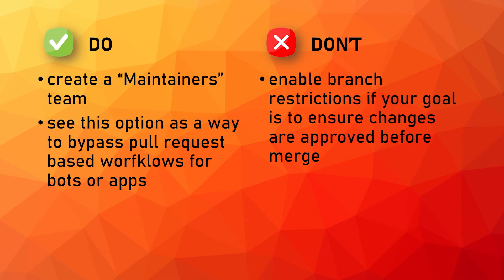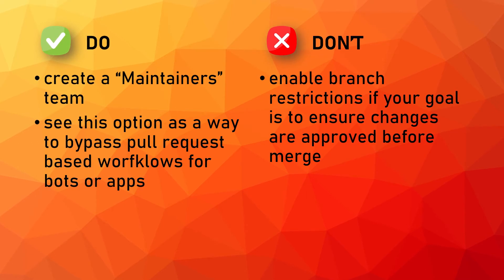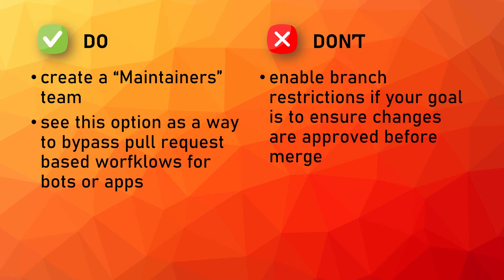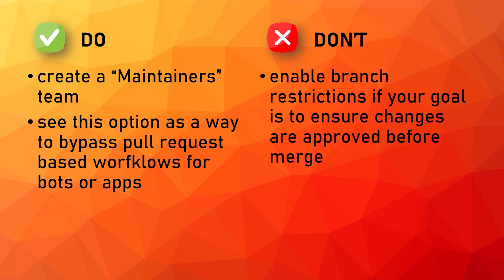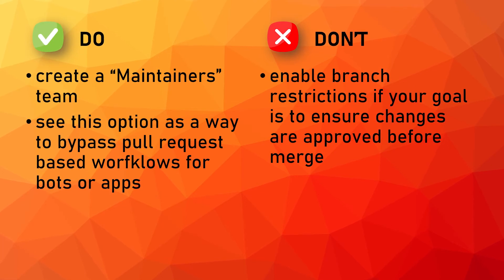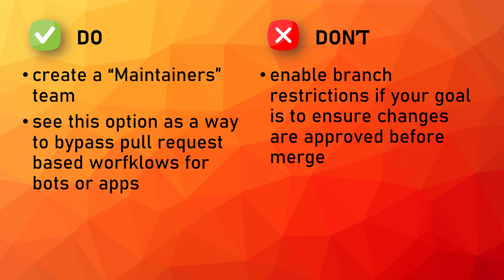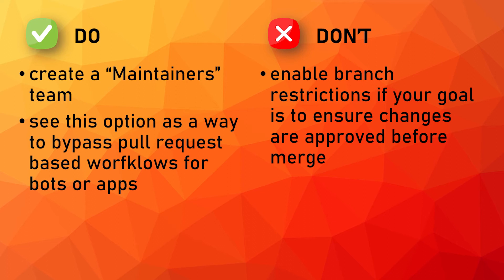The best practices in this case are the following. If you want to explicitly restrict push permissions to a specific set of collaborators — let's call them maintainers — then create a team for the repository maintainers. This allows you to simply add the team to the list instead of having to type in each maintainer individually, and it's one less thing to maintain when you're ready to promote collaborators to the maintainers team. You can also use this option as a way to bypass pull request-based workflows for bots or other apps that need to be granted permission to push directly to the branch. Finally, do not enable branch restrictions if your goal is to ensure changes need to be approved before collaborators can merge their own work — instead, use 'require pull request reviews before merging.' As a side note, branch restrictions is available for both public and private repos in GitHub Teams, Enterprise Cloud, and Enterprise Server.